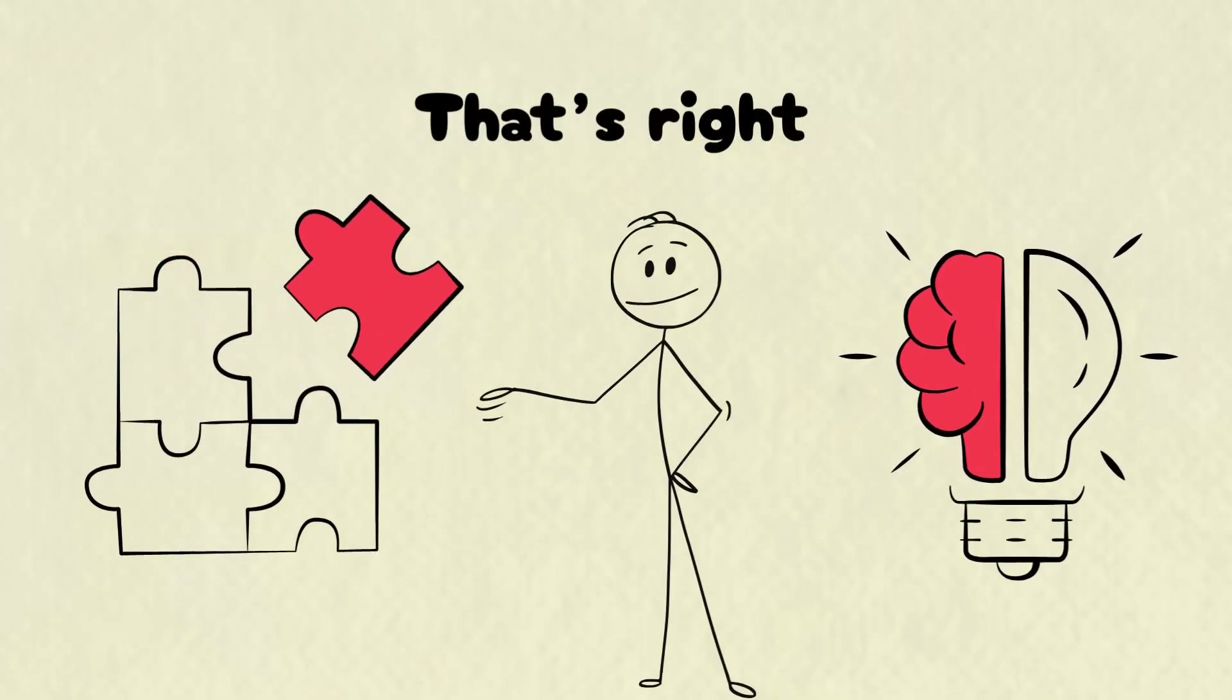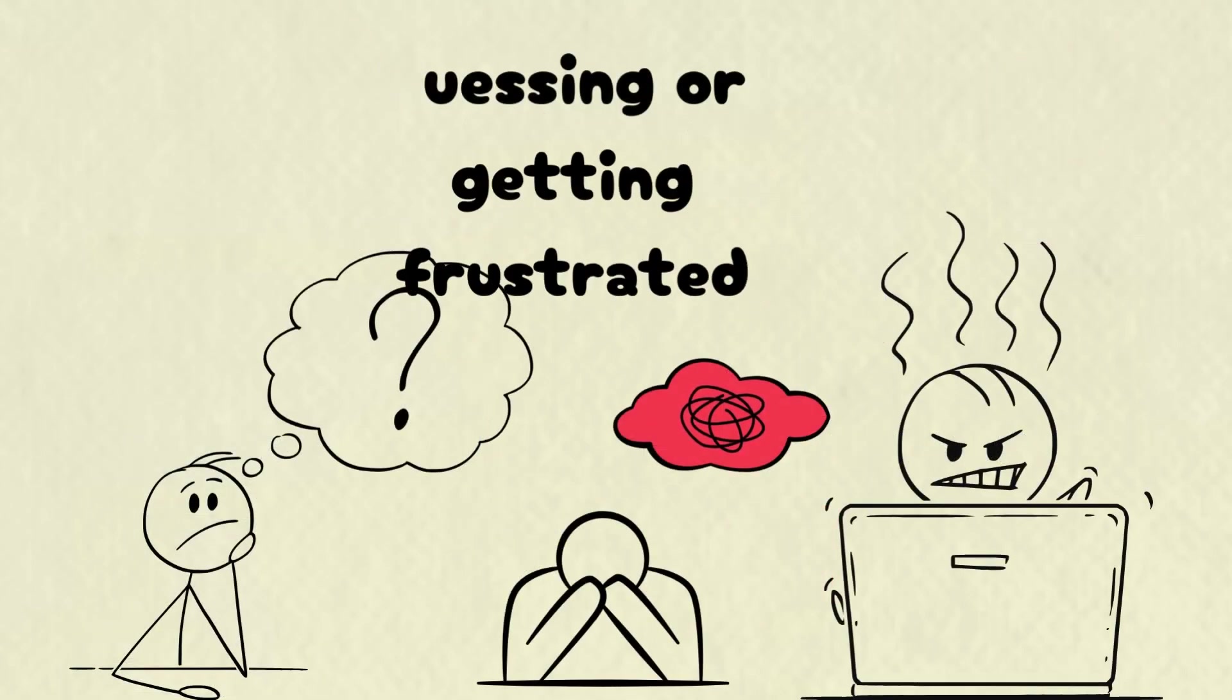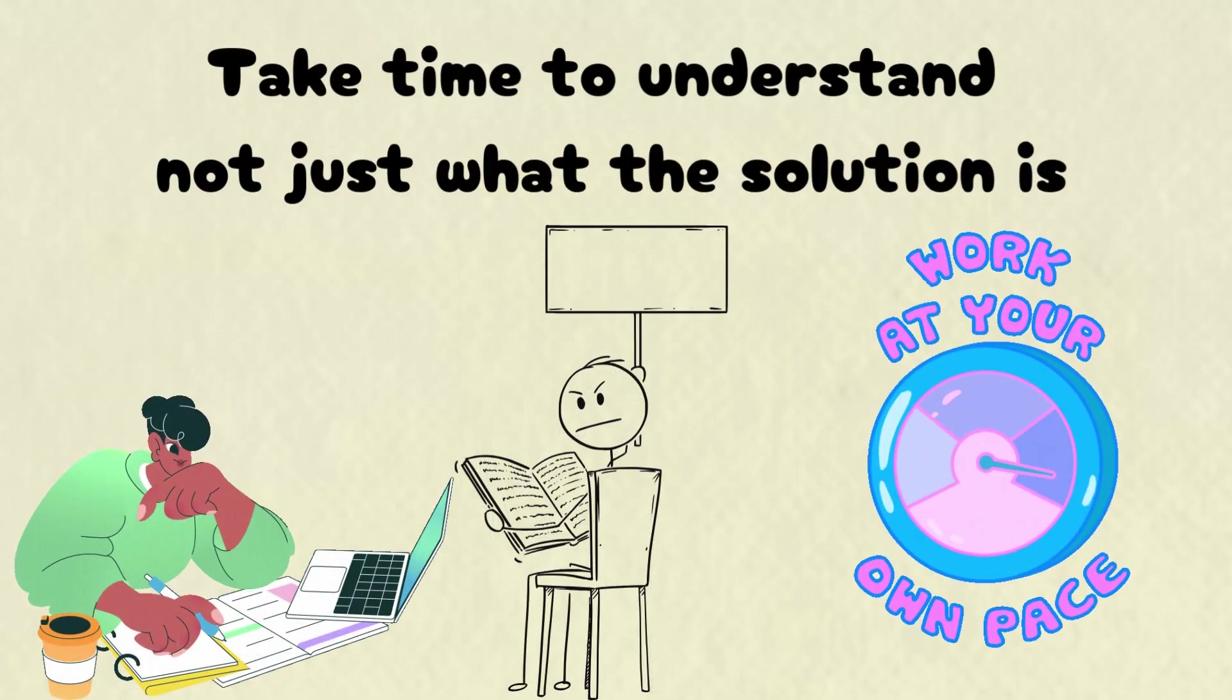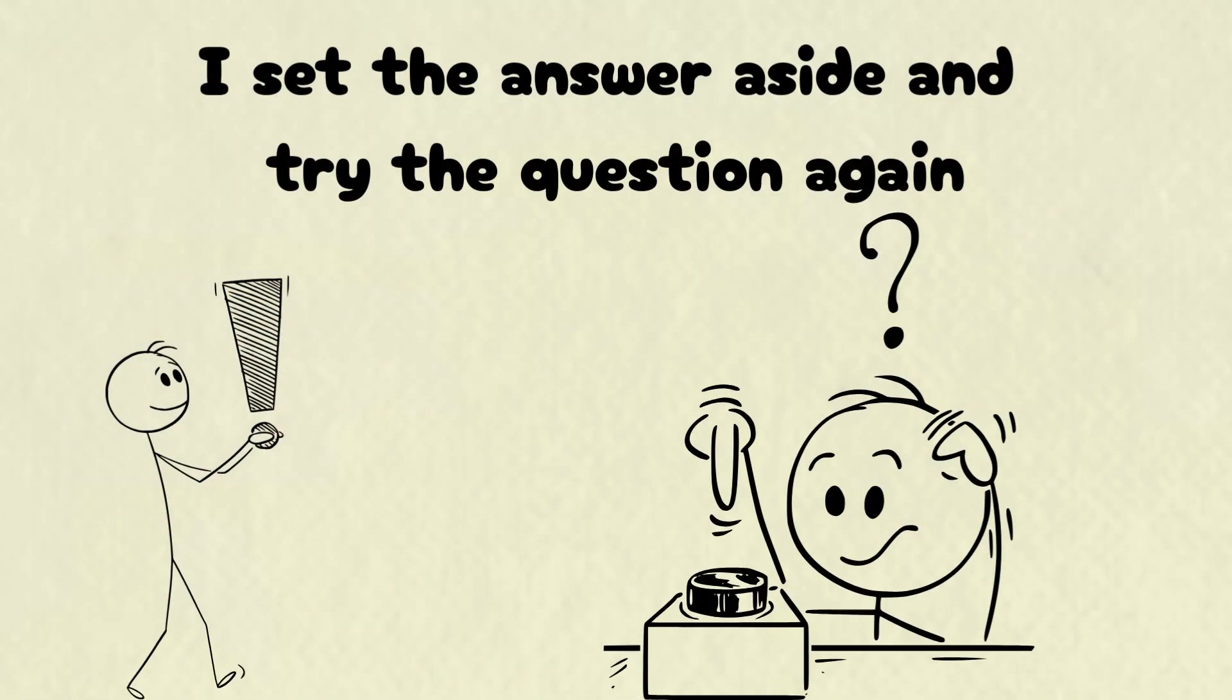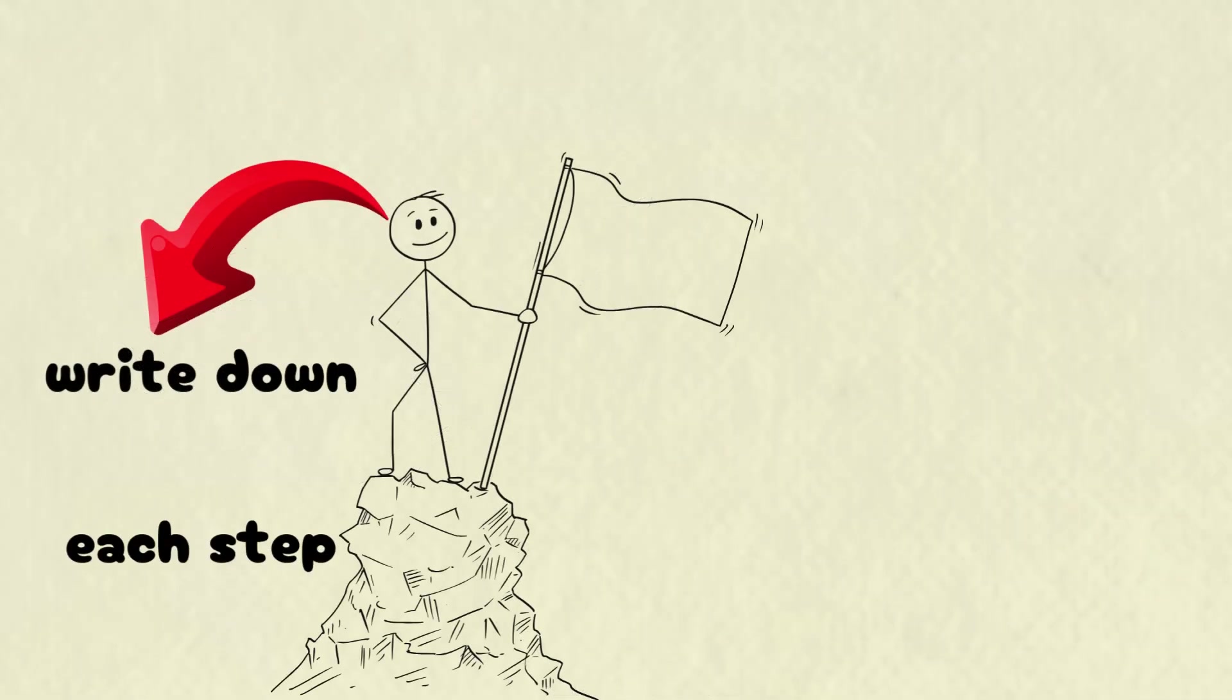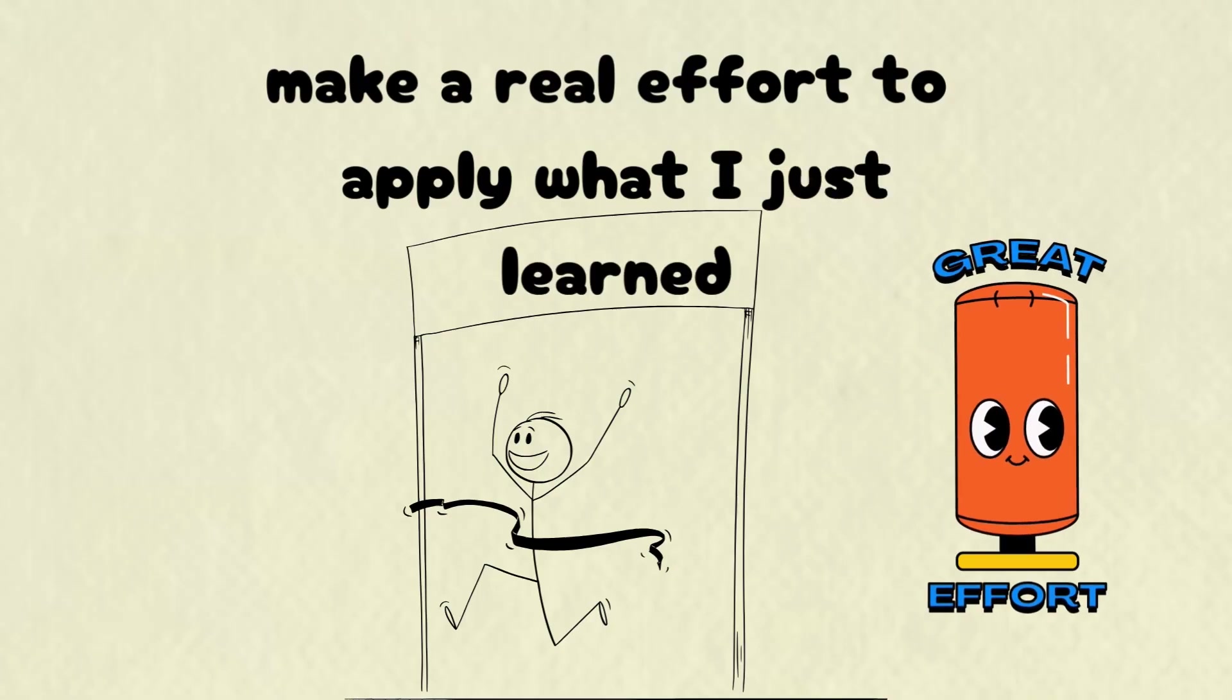That's right. I allow myself to give up, but only temporarily. Instead of guessing or getting frustrated, I study the answer carefully. I take time to understand not just what the solution is, but why each step was taken. Once I've grasped the logic behind it, I set the answer aside and try the question again, this time on my own. I write down each step and I don't give up too quickly. I make a real effort to apply what I just learned.